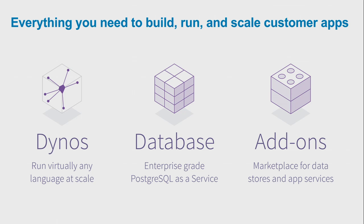Heroku provides everything you need to build customer-facing applications. The core of your Heroku app is something we call a dyno, which is an abstraction around your application code. You can think of it as a really small virtual machine that runs just your code, without the overhead of a full operating system. Dynos scale horizontally — to serve a little traffic, you use one dyno; need to double your traffic, you use two dynos — ten, a hundred, whatever, we can handle it.